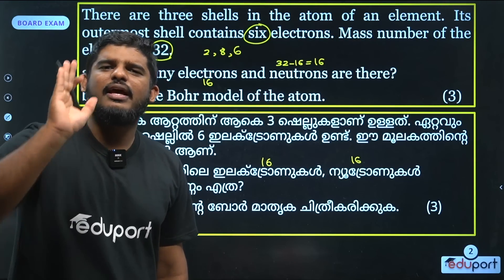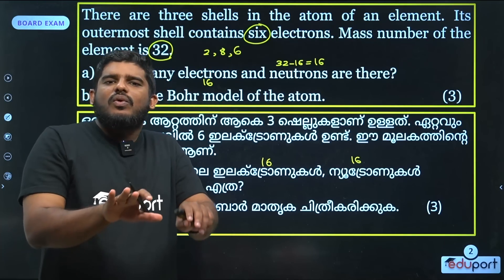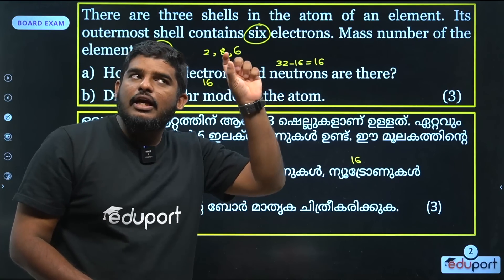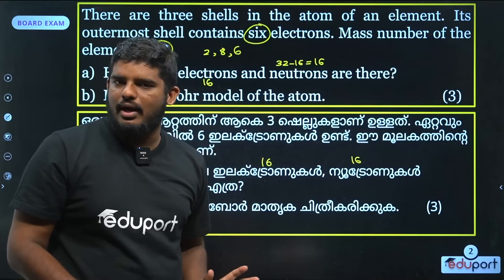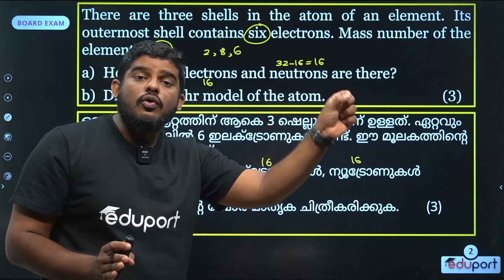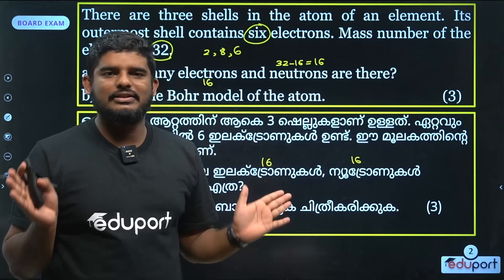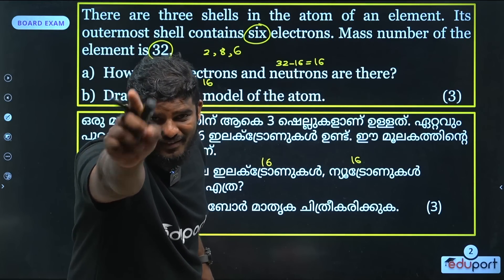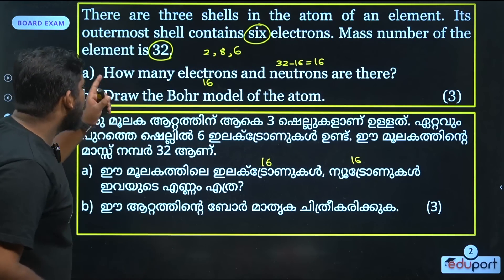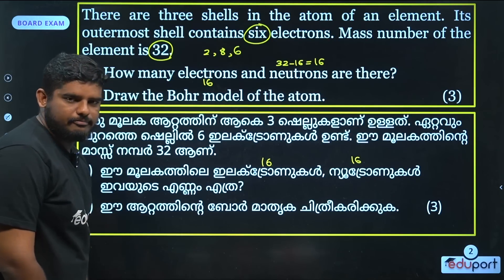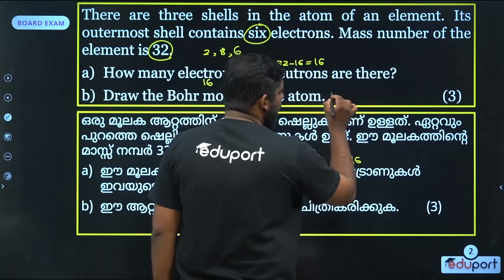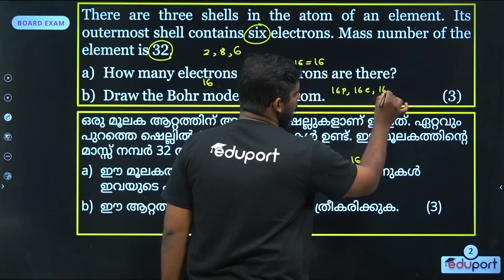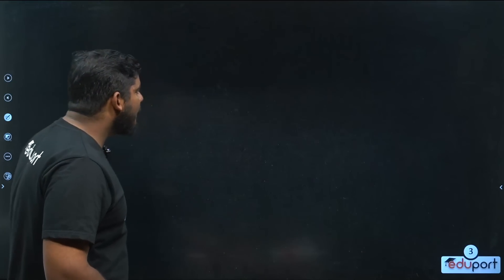We are going to learn how to represent the elements. Atomic number is electron and proton. The mass number is proton and neutron. Draw the Bohr model of atom. That means we have 16 protons, 16 electrons, and 16 neutrons.